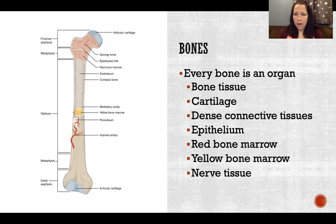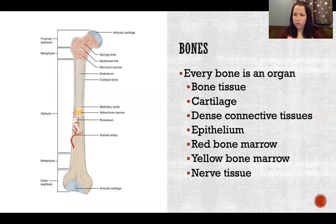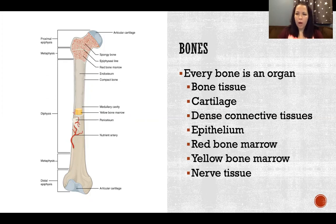There are four categories of tissue in the body: connective tissue, muscle tissue, nervous tissue, and epithelial tissue. All the many tissues that make up the entire body fit into one of those four categories. Bone tissue, cartilage, and dense connective tissues are all types of connective tissue. Epithelium is epithelial tissue. Red and yellow bone marrow are connective tissues, and nerve tissue is nervous tissue. So of our four broad categories of tissue in the body, we have three of the four that are part of every bone.